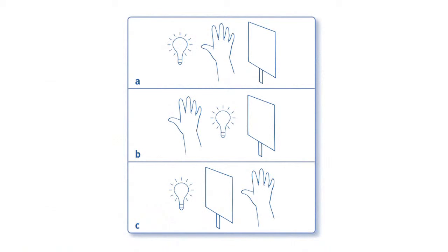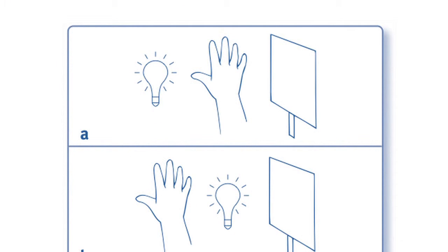Turn the lights back on and sketch the drawings in figure 2-1 on the board. Have the students identify that only the drawing with the order light bulb, hand, screen will create a shadow.